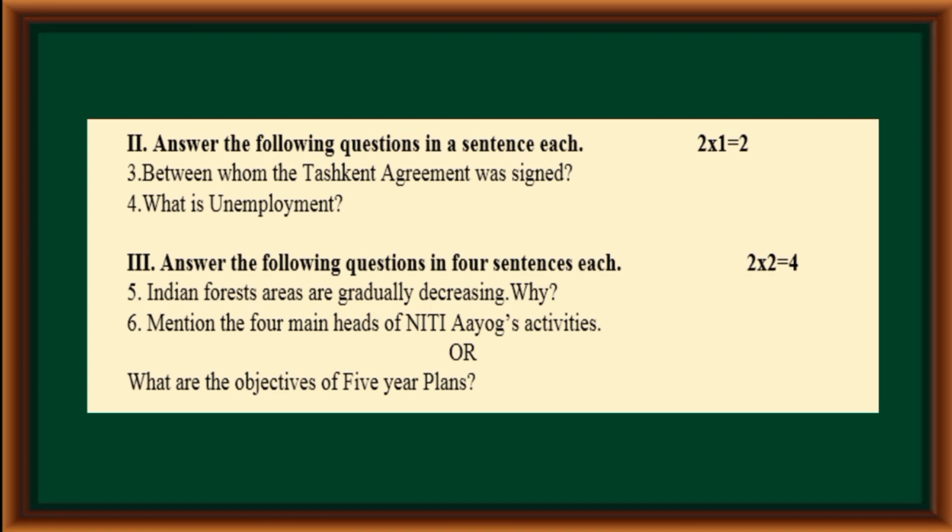Third main: Answer the following questions in four sentences each. Question number five: Indian forest areas are gradually decreasing — why? Mention the four main heads of Niti Aayog's activities, or what are the objectives of five year plans?